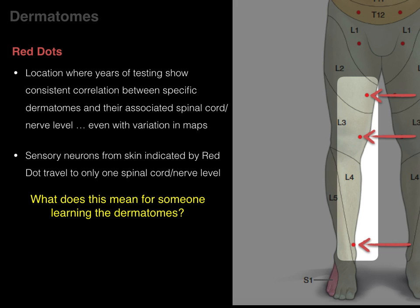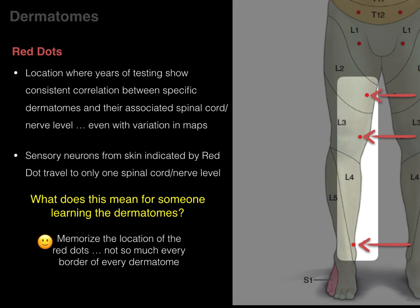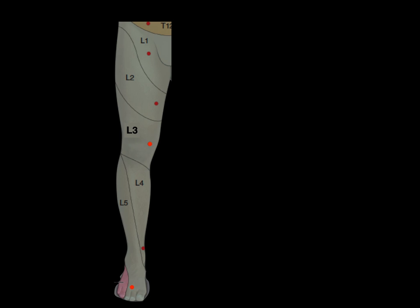So what does this mean for someone learning dermatomes? It means if you memorize the location of the red dots, you don't need to memorize every border of every dermatome. For example, if you're testing the L3 dermatome, you take a look at the border and location in the anterior view of the L3 dermatome, with the spinal cord levels of L2, L3, and L4.